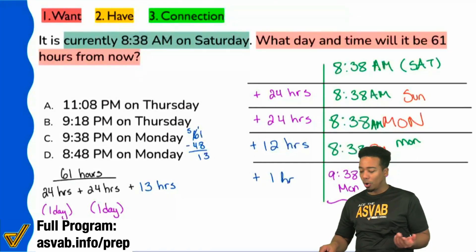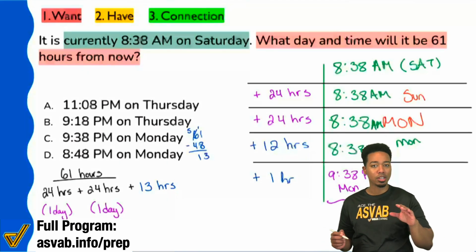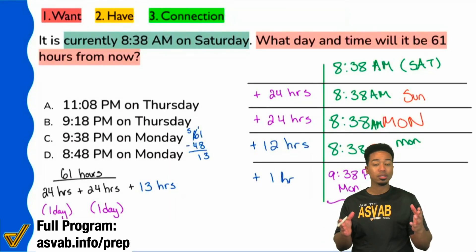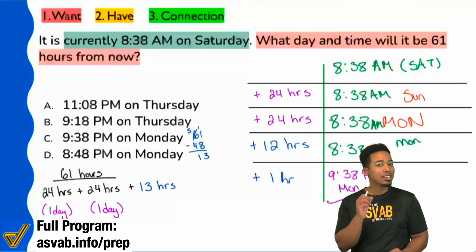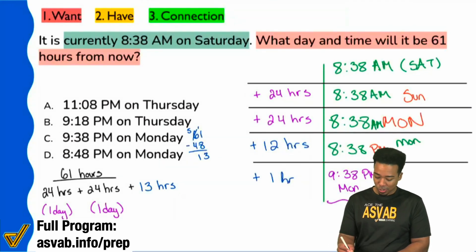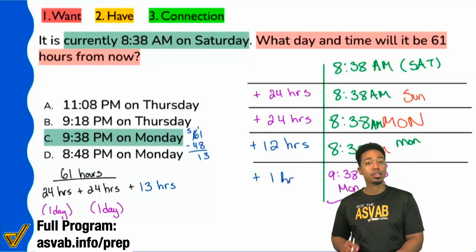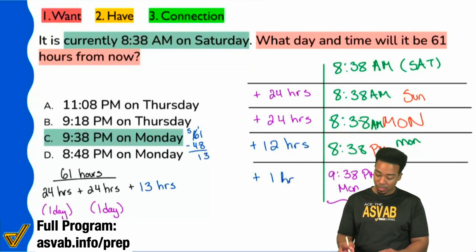C is the only answer that could even remotely make sense if you already understand that if all we're adding is hours, that minute hand is going to stay the same. We can immediately say that the correct answer is C - it's the only answer that has 38 minutes. This one doesn't, that one doesn't, this one doesn't - immediately they're all wrong right away.